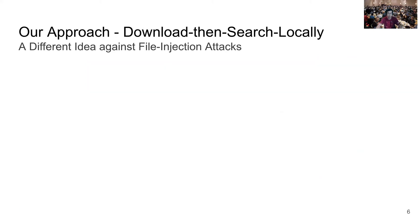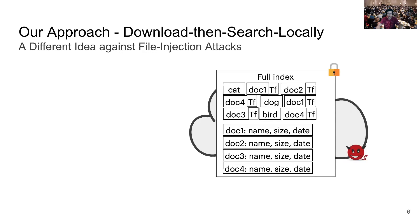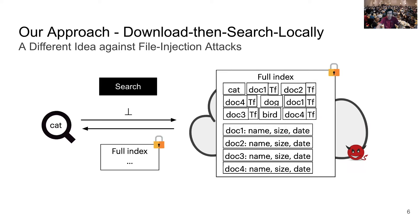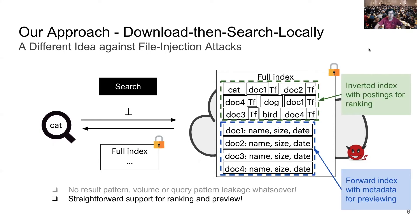In our work, we take a different approach called download-then-search-locally. Users construct a text search index, encrypt it, and upload it to the server. For search, users download the full encrypted index blob, decrypt it locally, and search for the keyword. As you can see, there is no result pattern, volume, or query pattern leakage at all. Moreover, users can embed sufficient information to support ranking and previewing — specifically an inverted index mapping keywords to postings, each containing the document identifier and occurrence count.